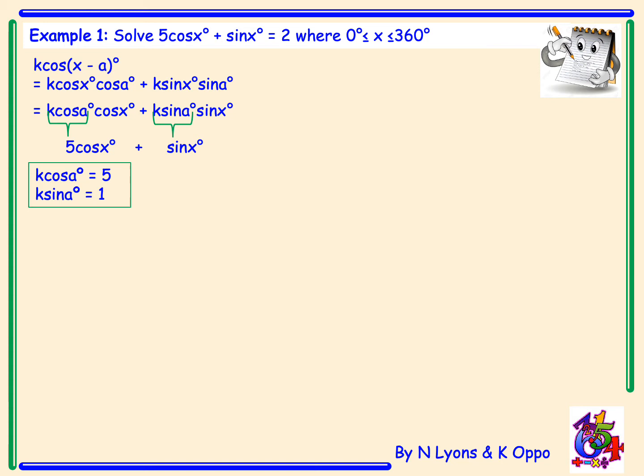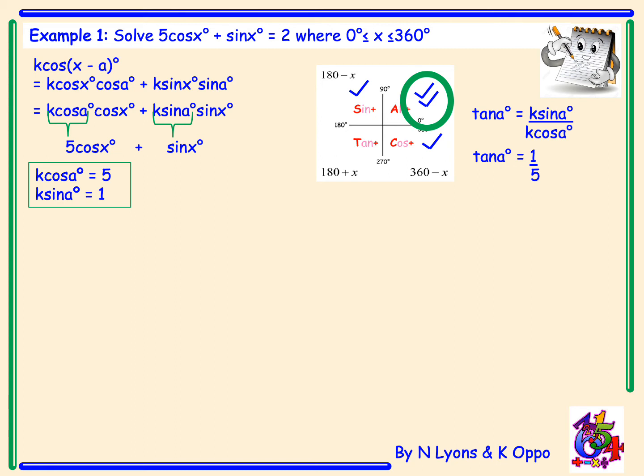After we've clearly stated this we need to draw our cast diagram. Cos a is equal to positive 5 so tick a and c. Sin a is equal to positive 1 so tick s and a. So we're looking for an angle in the first quadrant. Writing out our rule tan a equals k sin a over k cos a. So tan a equals 1 over 5. If we do inverse tan of a fifth we'll get an answer of angle a as 11.3 degrees.